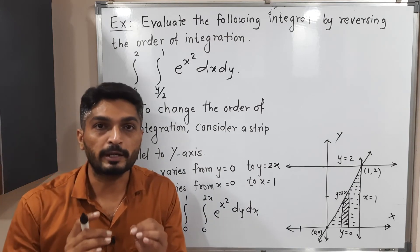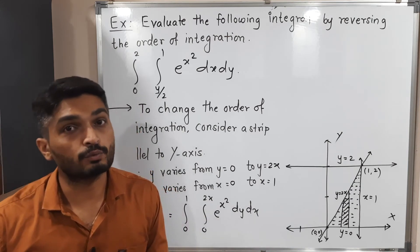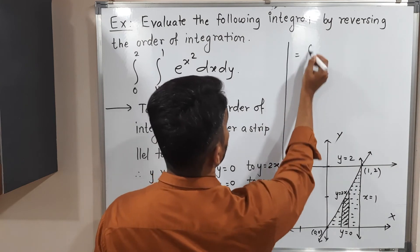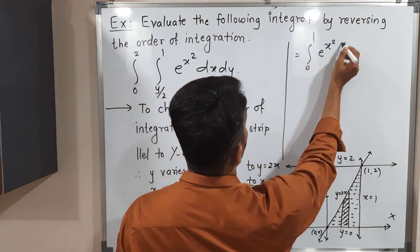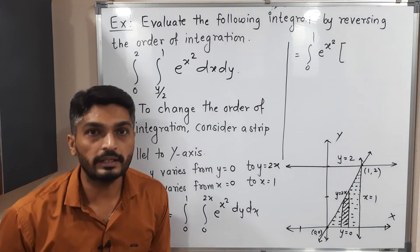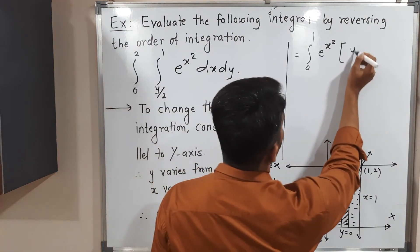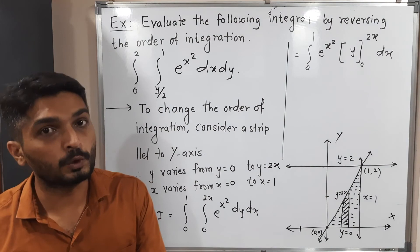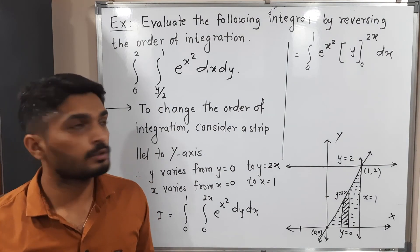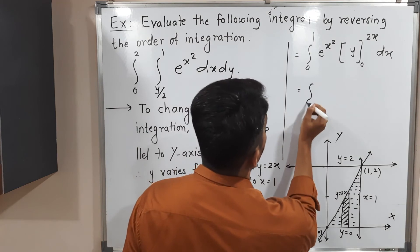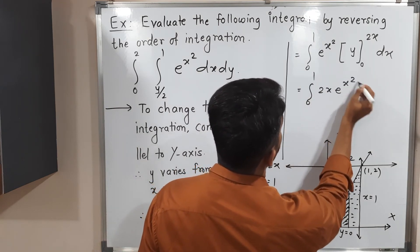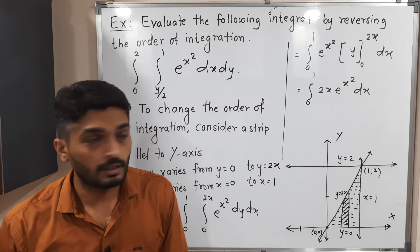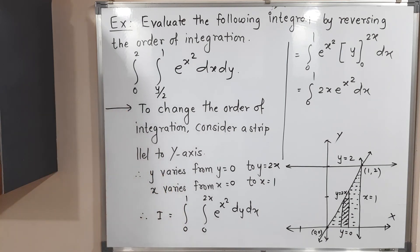When we integrate with respect to y, x and all functions of x are constant, so e raised to x squared comes outside the integration. We integrate dy only, giving y with limits 0 to 2x, dx. Substituting the upper limit gives 2x times e raised to x squared dx from 0 to 1. We cannot solve this directly — substitution is needed.